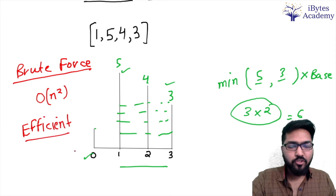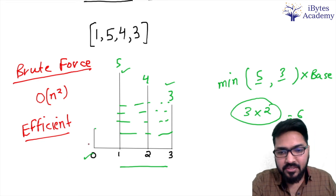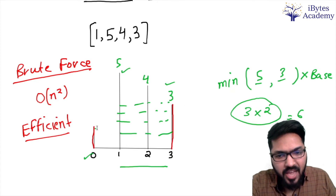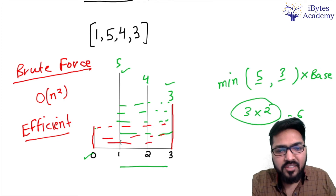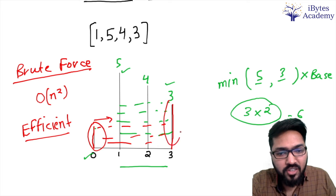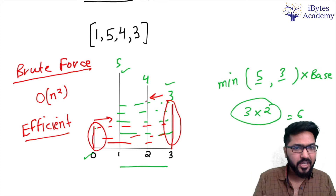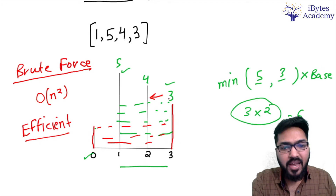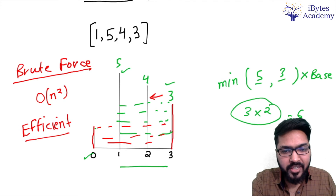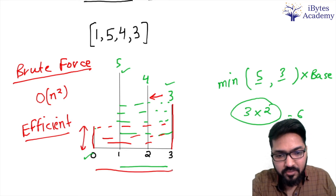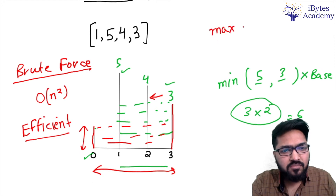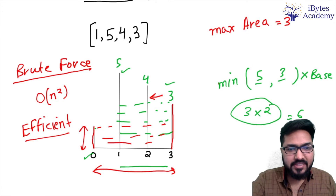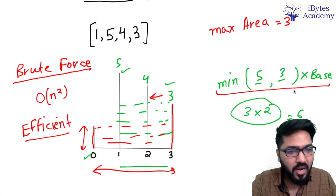Now let's discuss the efficient solution. Here's a small hint: first consider the container formed by the first bar and the last bar, calculate the water, and then slowly move either the left bar forward or the right bar to the left. So as I said, we start with the first and the last bar. The water contained is 1 multiplied by 3, so I'll initialize max area to 3.